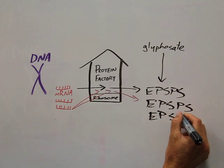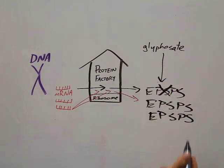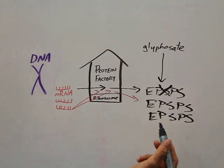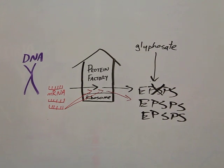So if we spray our glyphosate on this plant, we can take out some of the enzyme, but there's still plenty left in the plant and it survives. And this is where the RNAi technology comes in.